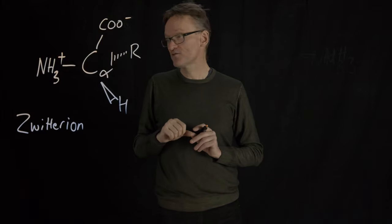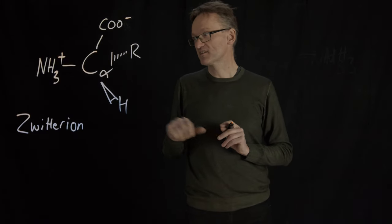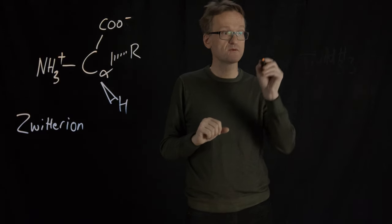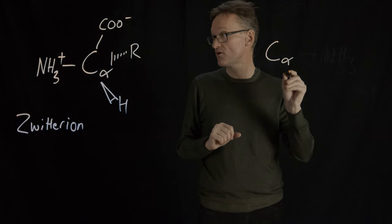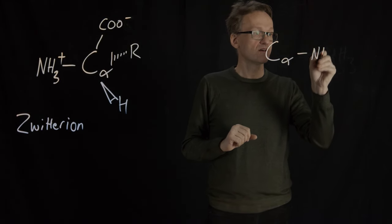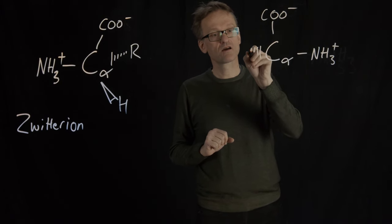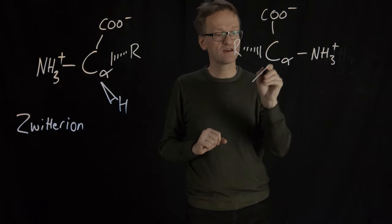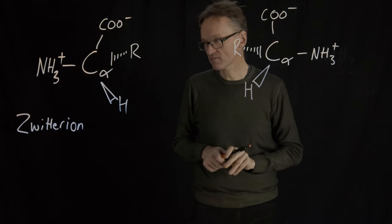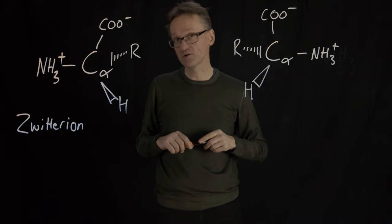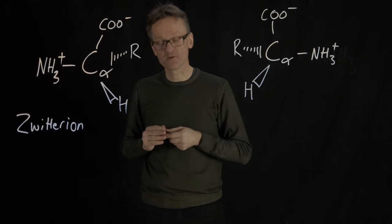If you remember your upper secondary school chemistry, that's going to be a chiral center, meaning that I can draw the mirror image of that molecule NH3+ and then COO-, R in the back and H in the front. There is no way to turn the left molecule here into the right one by mere rotation.